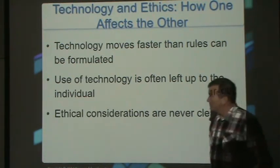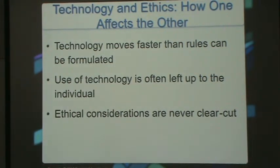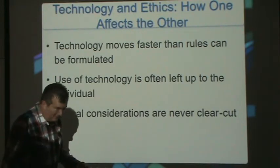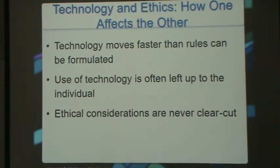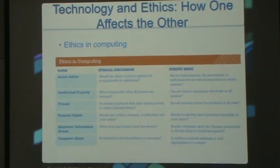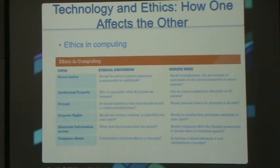Now we're moving into the technology part. Technology is moving faster than rules can be written and enforced. Ethics becomes very important in technology because a lot of times we don't have laws to follow — use of technology is often left up to the individual. Ethical considerations are very real and rarely clear-cut. Topics include social justice, intellectual property, privacy, property rights, electronic information access, and computer abuse.